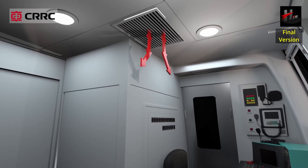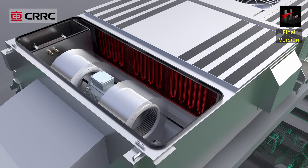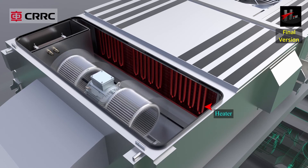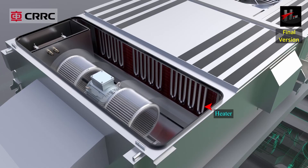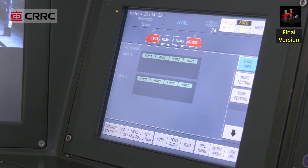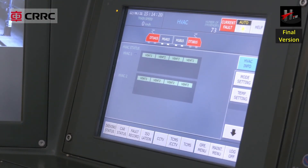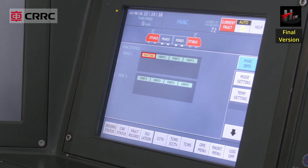Warm air is discharged into the driver's cabin through the cab booster fan. The heater operation stops as soon as the target temperature is achieved. During operation in heating mode, heat is indicated on the TC-MS HVAC display.